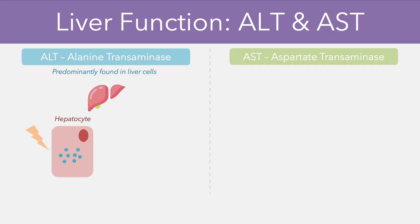Examples of injuries to hepatocytes can include pathologies such as hepatitis, alcoholic liver disease, non-alcoholic fatty liver disease, or particular toxins or overdoses, and any of these factors would result in a rise in the ALT level.